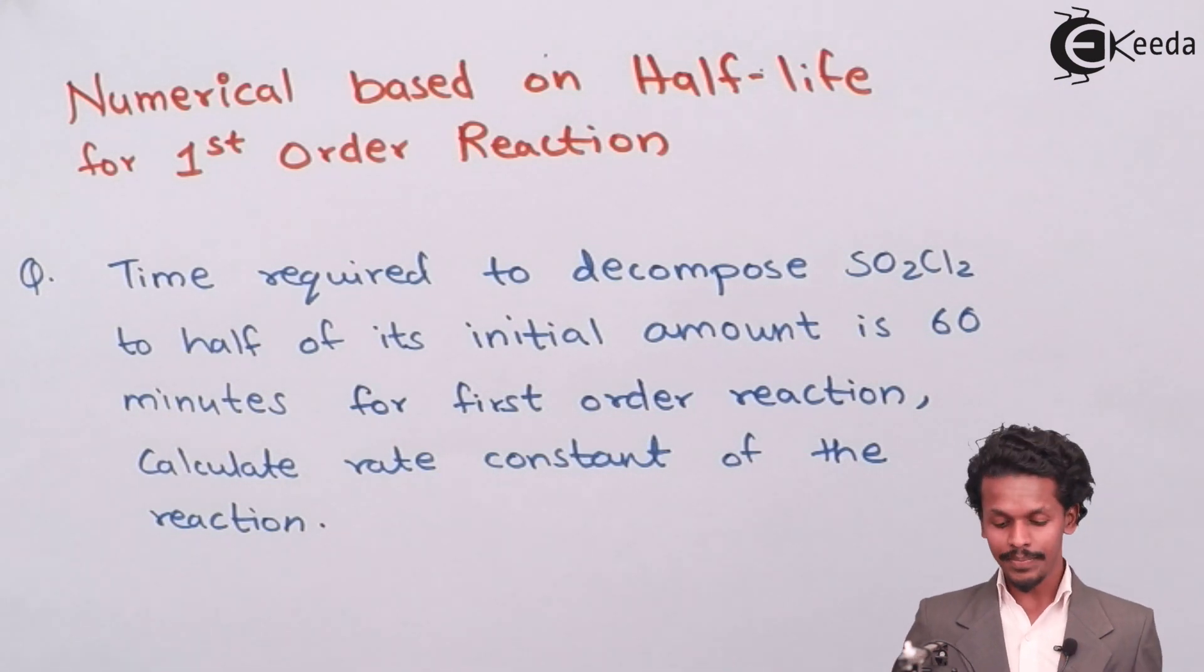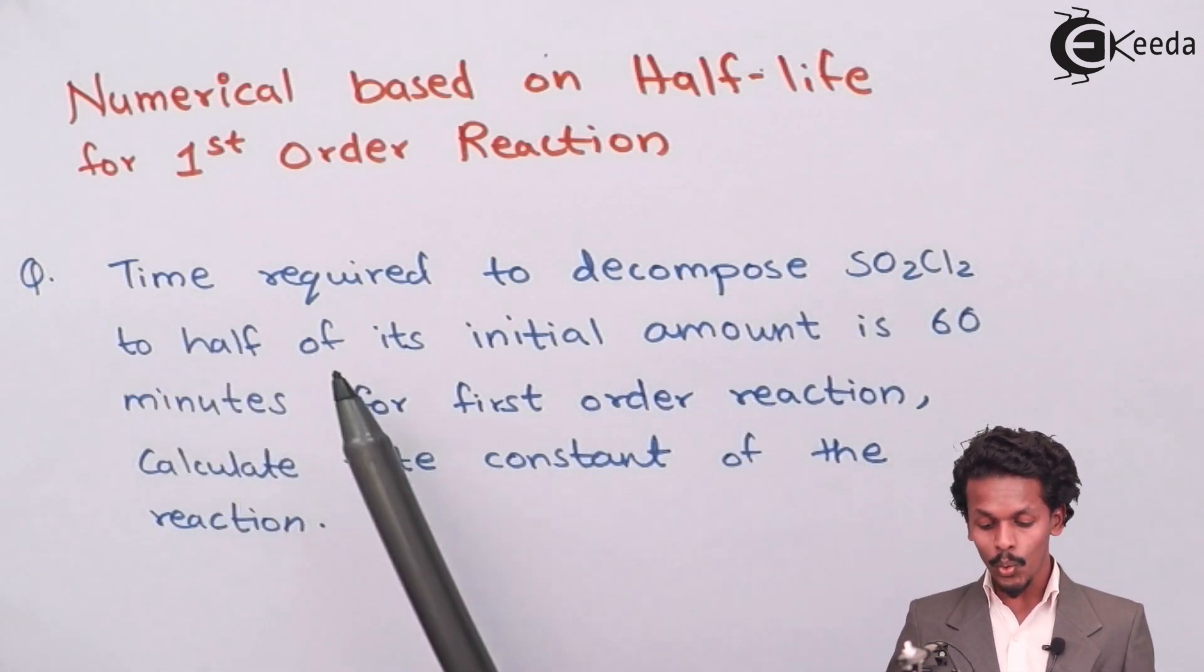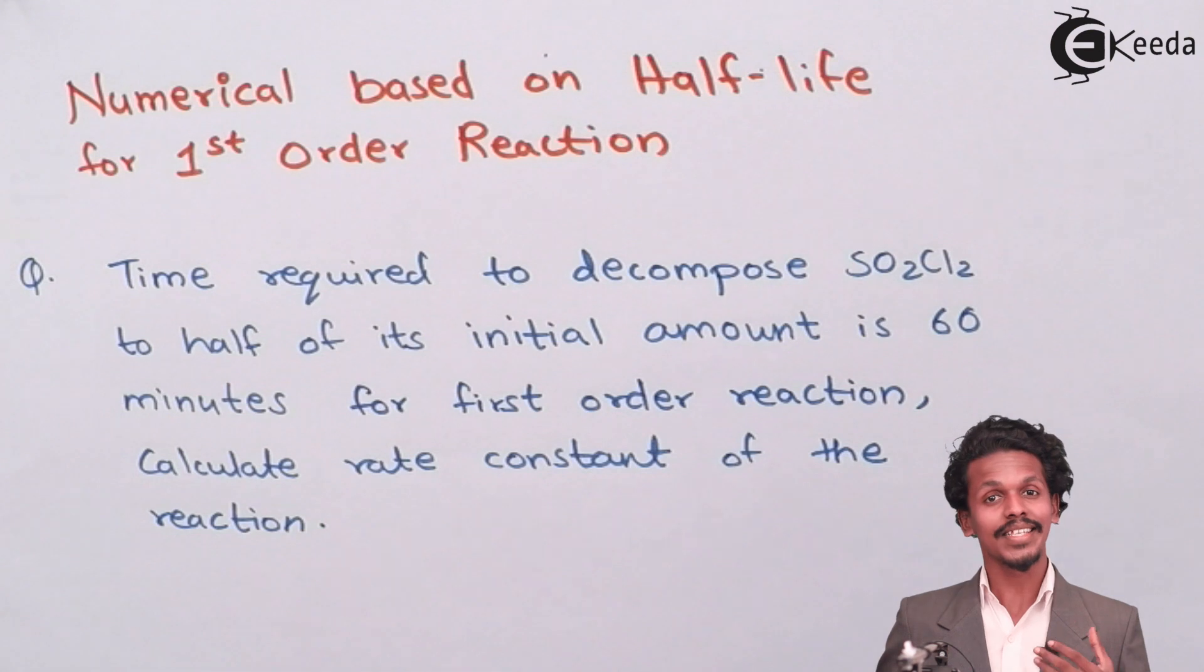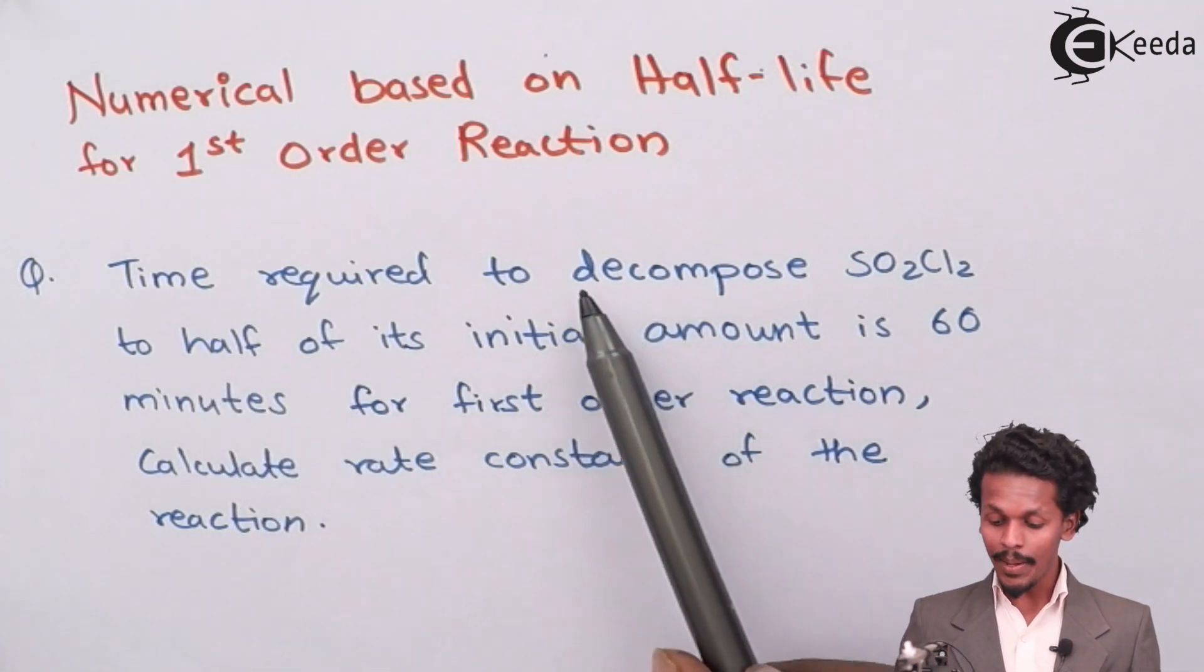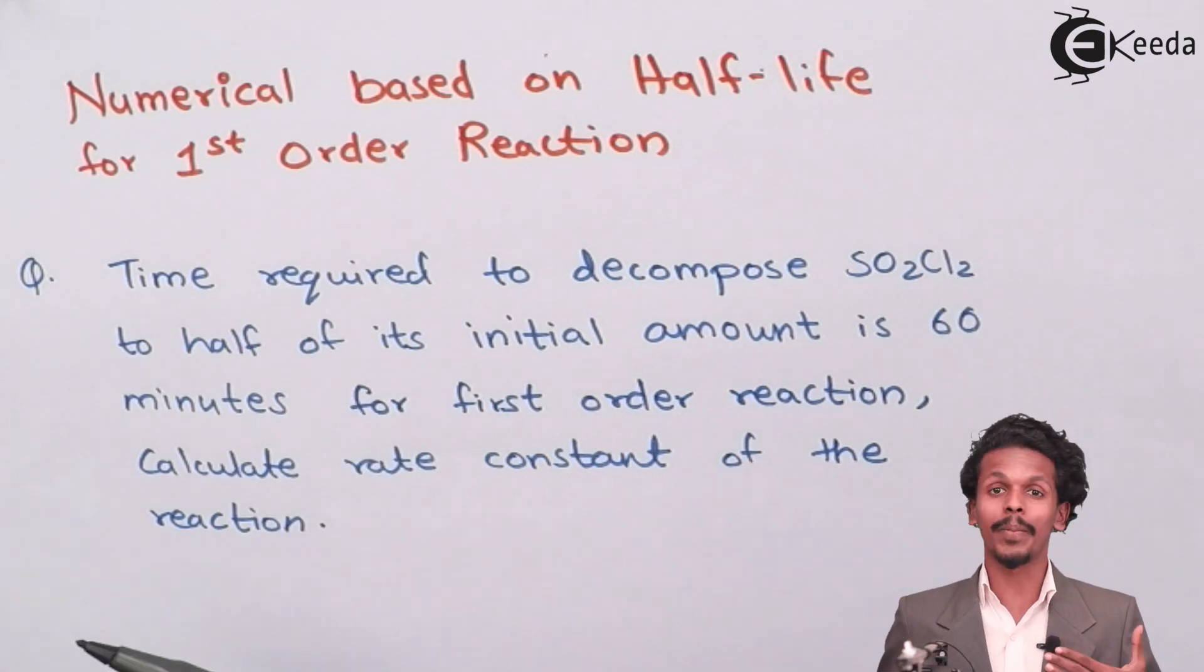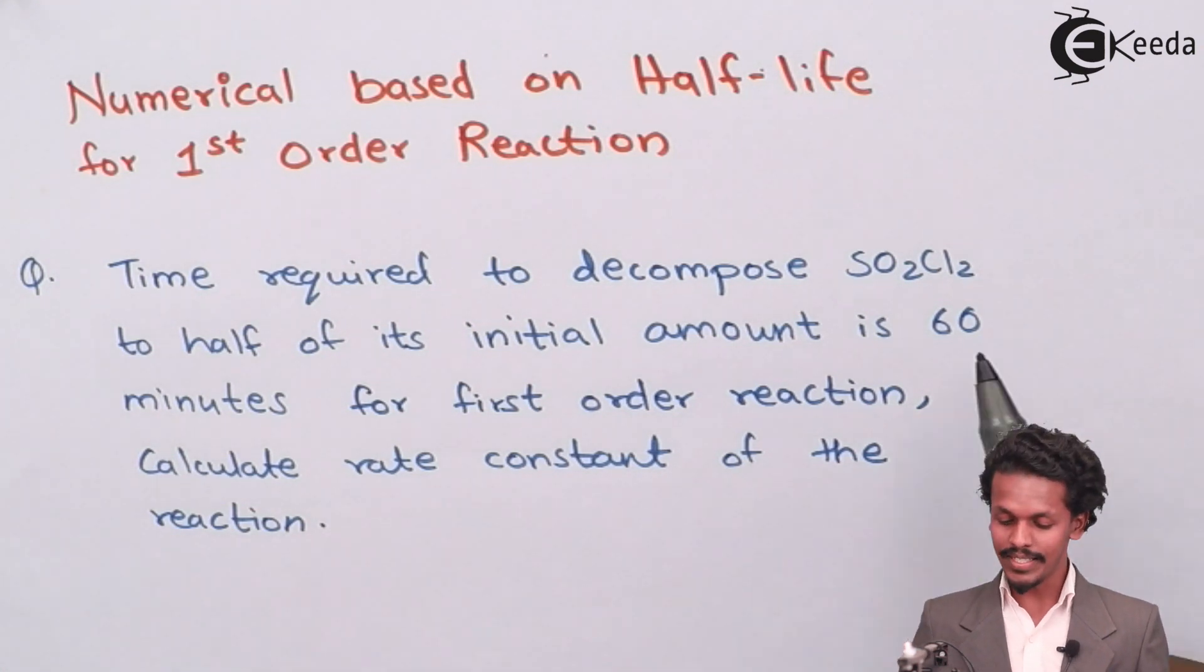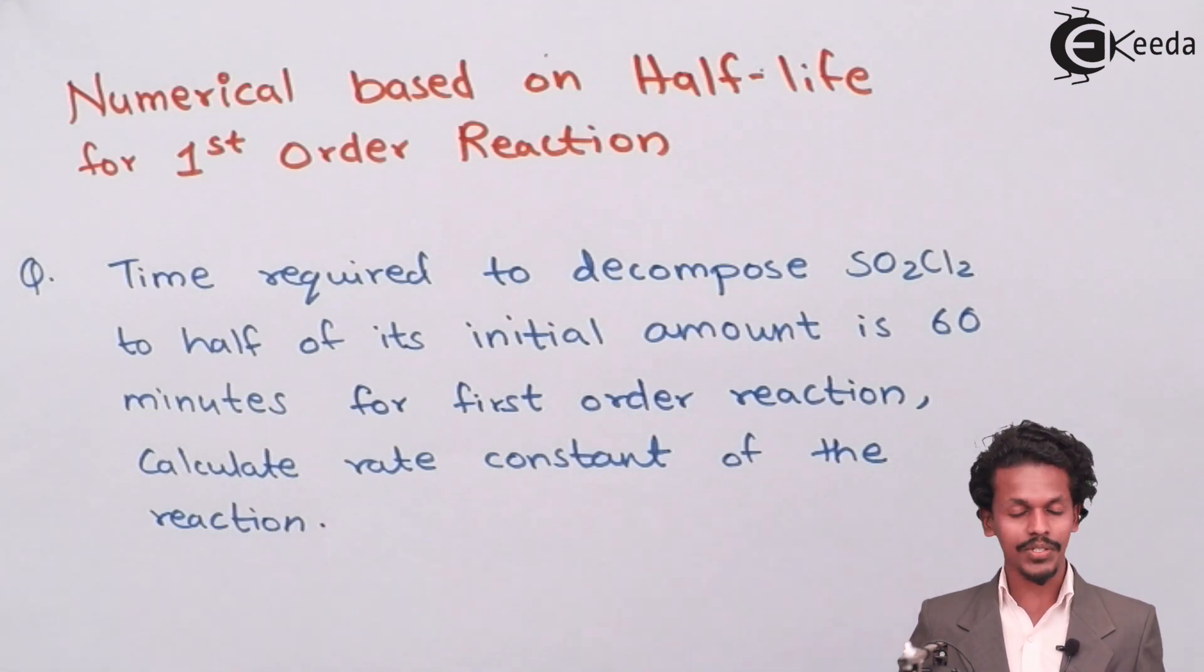The question states: the time required to decompose SO2Cl2 to half of its initial amount is 60 minutes. This means the half-life is given as 60 minutes. Based on this, we have to calculate the rate constant for the reaction.